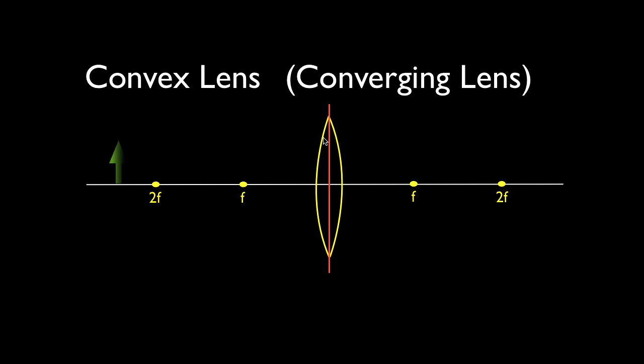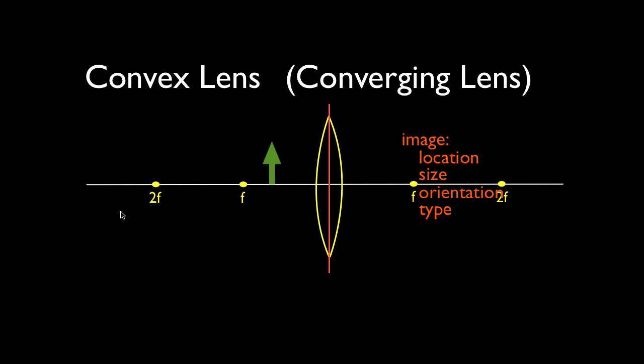By the end of this video you should be able to draw the ray diagram to locate the image for any position of the object. This green arrow is our object. We're going to start beyond 2f, then put the object at 2f, then between f and 2f, then at f, and finally inside of f. For any case you should be able to draw the ray diagram and know beforehand where the image will be, what size it will be relative to the object, its orientation, and whether it will be a virtual or real image.